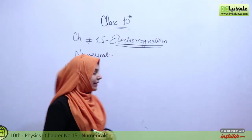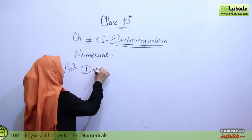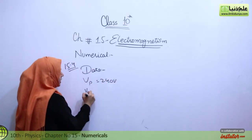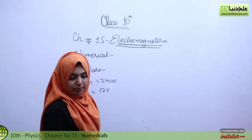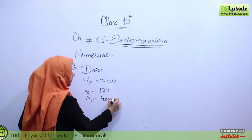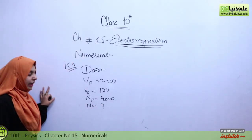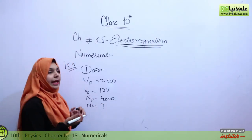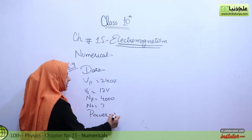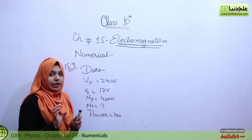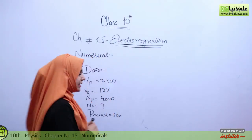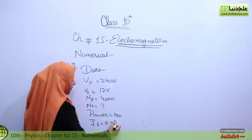Let's write the given data. Primary voltage VP is 240 volts, secondary voltage VS is 12 volts, number of turns in the primary coil NP is 4,000. We need to find NS, the number of turns of the secondary coil. The transformer is 100% efficient. The current in the secondary coil IS is 0.4 ampere, and we need to find IP, the current in the primary coil.